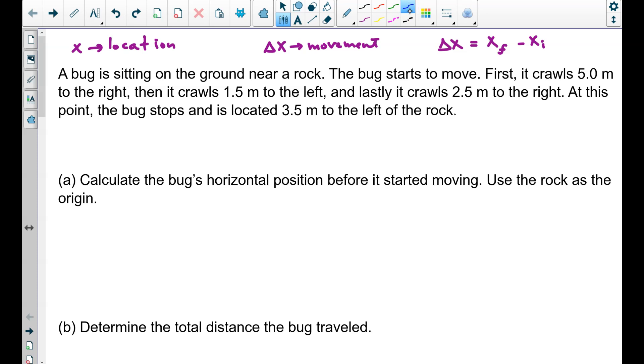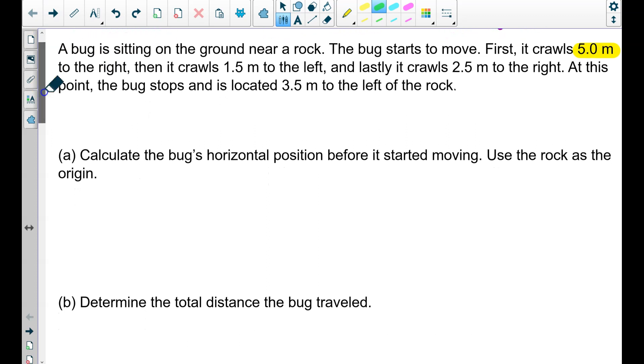Let's use this information to solve the problem at hand. A bug is sitting on the ground near a rock. It starts to move. First, it crawls five meters to the right. What would you underline in that sentence? What would you highlight? You might think, I need to highlight five meters, and I need to highlight right, because to the right is positive.